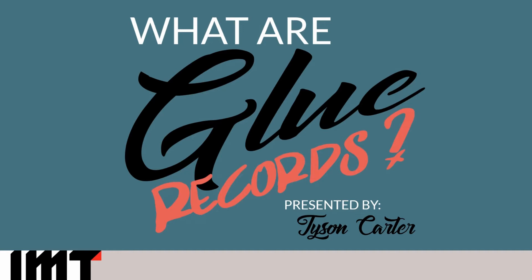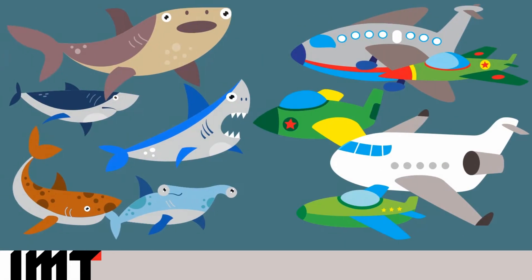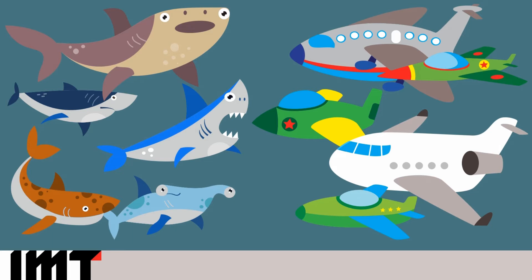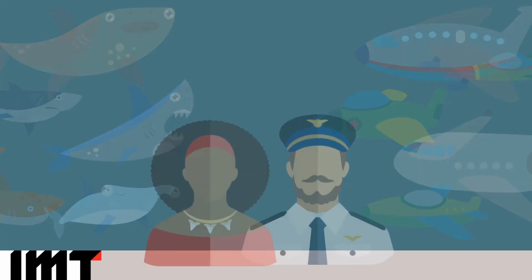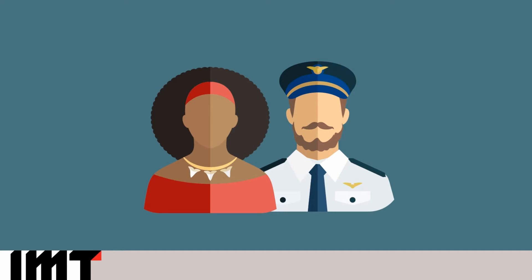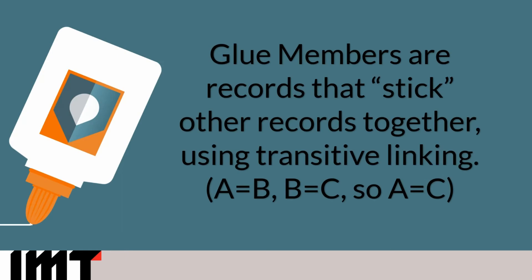Let's discuss exactly what glue records are. To begin with, if we think of the classic musical West Side Story, where we find the Sharks vs. the Jets — just like in Romeo and Juliet, there's a bit of a love story where there's some unrequited love between two people who really shouldn't get along. A glue situation is a bit similar to that. Glue members are records that stick other records together using transitive linking. If you remember the transitive linking property from algebra: if A equals B, and B equals C, then A equals C. What we end up having is that these glue records can stick data together that doesn't necessarily belong.